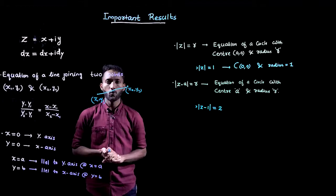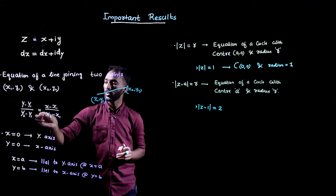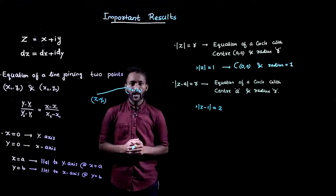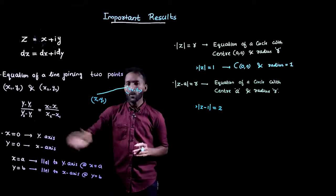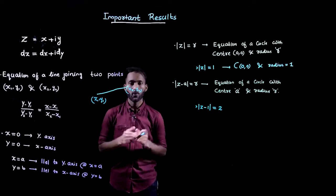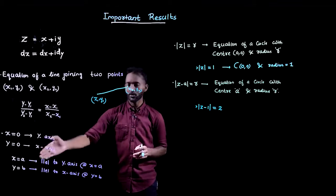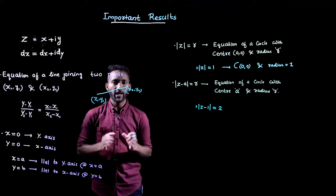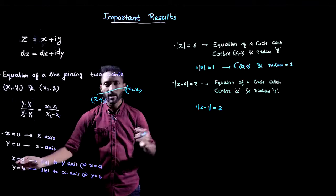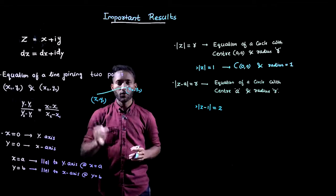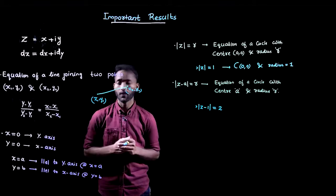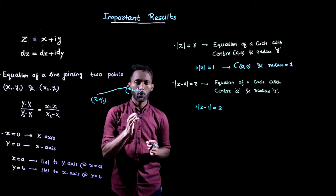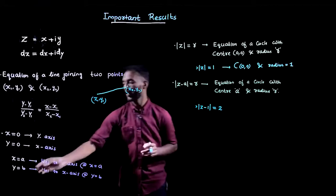Whenever you want to find an equation connecting any two points, you can easily use this equation to get the equation of the corresponding line. x equal to 0 means it is the equation of the y-axis; similarly y equal to 0 means it is the equation of the x-axis. Also, x equal to a is an equation of a line parallel to the y-axis at x equals a, and y equal to b is an equation of a line parallel to the x-axis at y equals b. You should remember these four equations of lines.